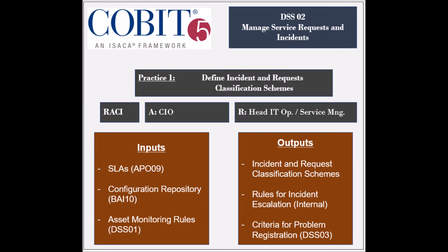The process has seven practices, and the first practice is to define incident and service request classification schemes. The entities that are responsible for this practice are the head of IT development, the head of IT operations, and the IT service manager. The entity that is held accountable is the chief information officer.